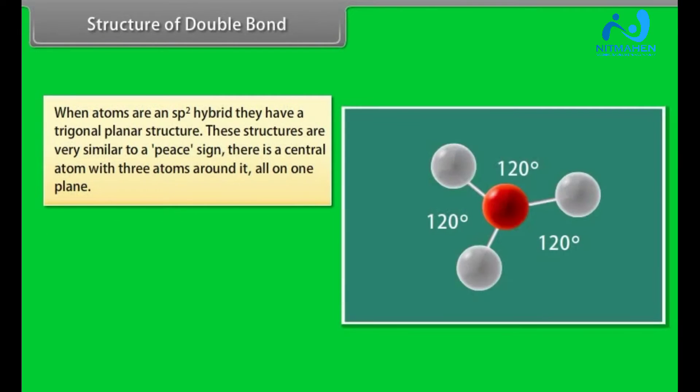When atoms are an sp2 hybrid, they have a trigonal planar structure. These structures are very similar to a pi sign. There is a central atom with three atoms around it, all on one plane. Trigonal planar molecules have an ideal bond angle of 120 degree on each side.